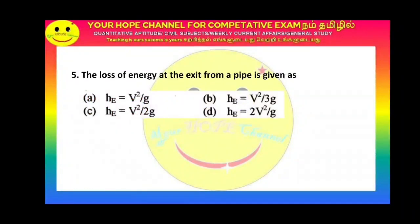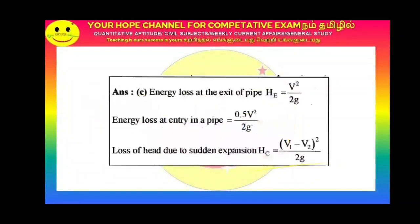The loss of energy at the exit from a pipe is given as option C: V²/2G. Head loss due to exit and head loss due to entry use the same formula. For sudden contraction, you choose 0.5V²/2G. The pipe contracts and expands to different sizes at different points, so velocities are V1 and V2.